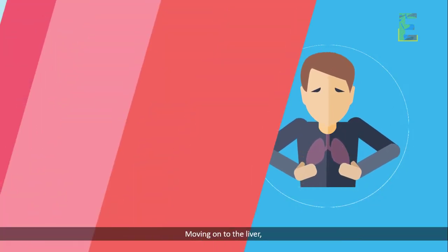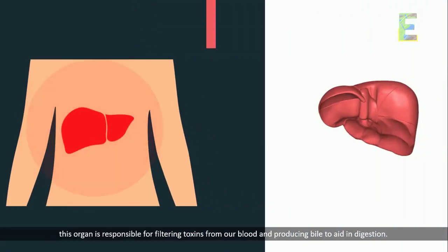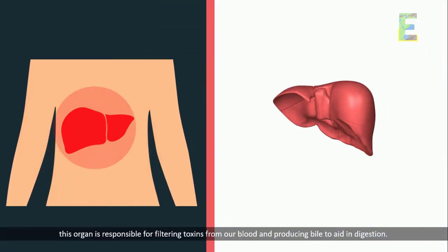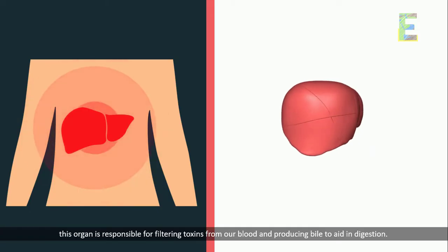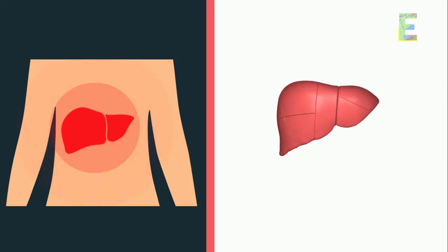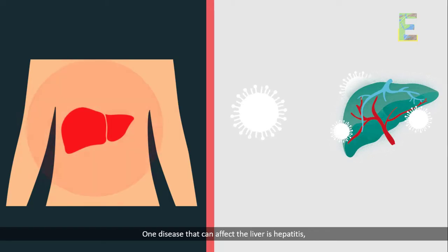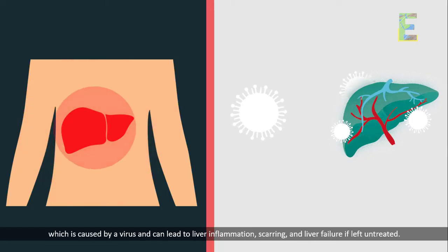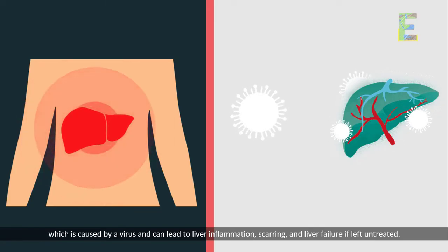Moving on to the liver — this organ is responsible for filtering toxins from our blood and producing bile to aid in digestion. One disease that can affect the liver is hepatitis, which is caused by a virus and can lead to liver inflammation, scarring, and liver failure if left untreated.